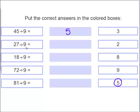27 divided by 9 equals what? 3, 2, 8, or 9. It is 3. 27 divided by 9 equals 3. 18 divided by 9 equals what? Very good. 2.